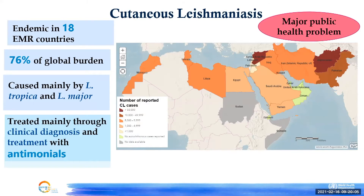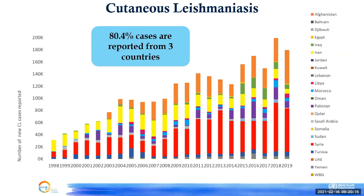The disease is mainly managed through clinical diagnosis and treatment with antimonials. Looking at the cutaneous leishmaniasis situation over the past few years: in 2019, more than 80% of cases were reported from three countries — Syria, Afghanistan, and Pakistan. If we concentrate our efforts in these three countries, we can significantly reduce the cutaneous leishmaniasis burden in our region.